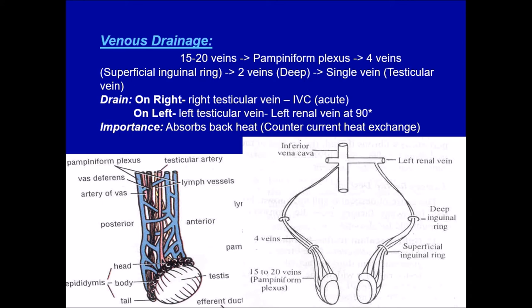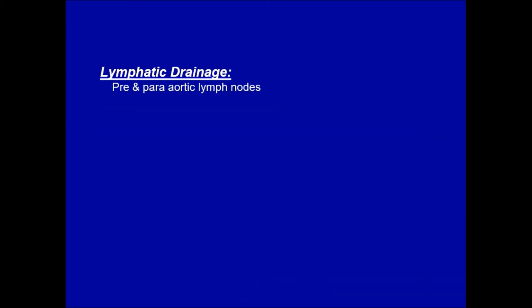The reason there is a plexus of veins around the testis is also functional: the pampiniform plexus, being outside the body in the scrotum, helps absorb heat and enables counter-current heat exchange, cooling the testis to approximately 4 degrees below body temperature, which is necessary for spermatogenesis.